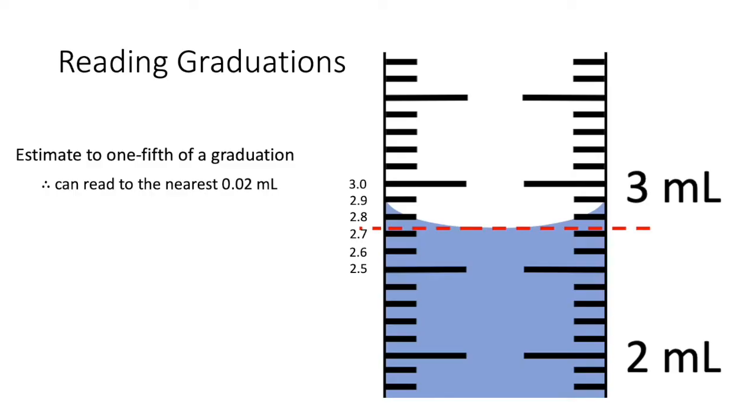The first decimal place we read from the graduations, and the second decimal place we estimate. Using this method, we can say that the meniscus is at 2.74 milliliters.